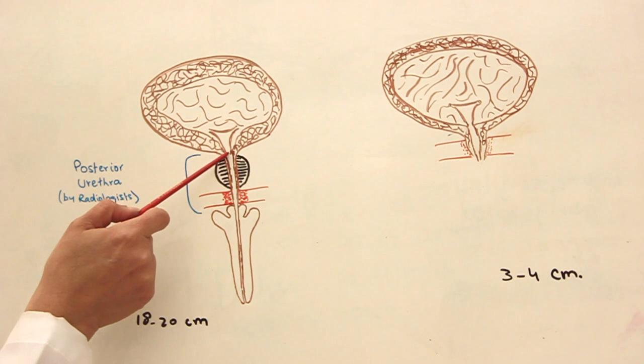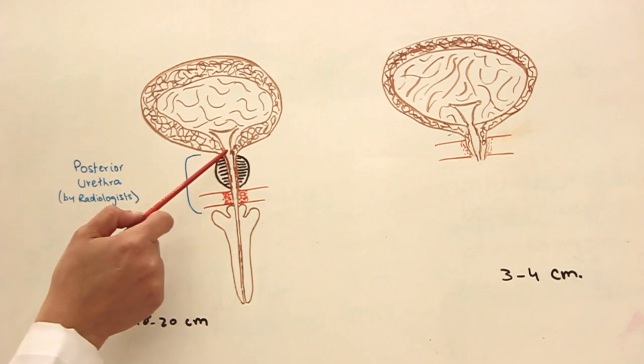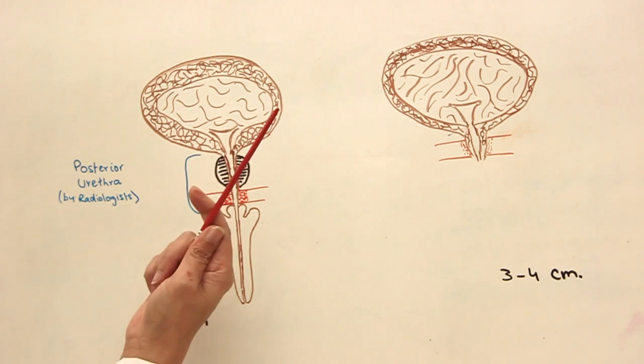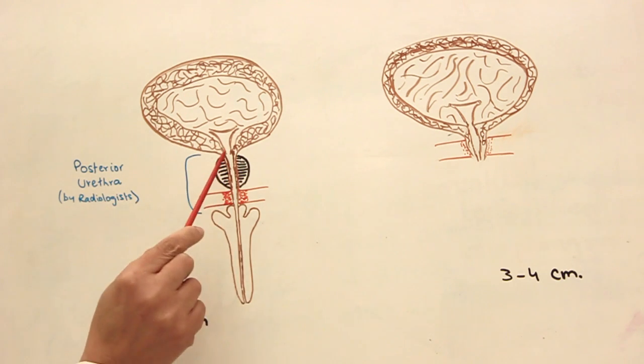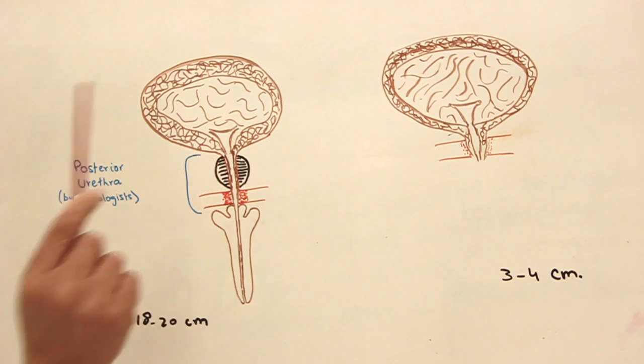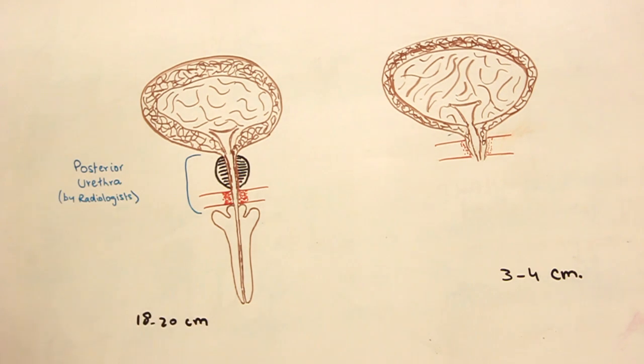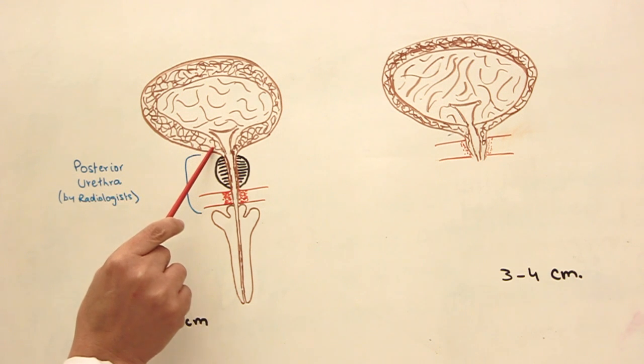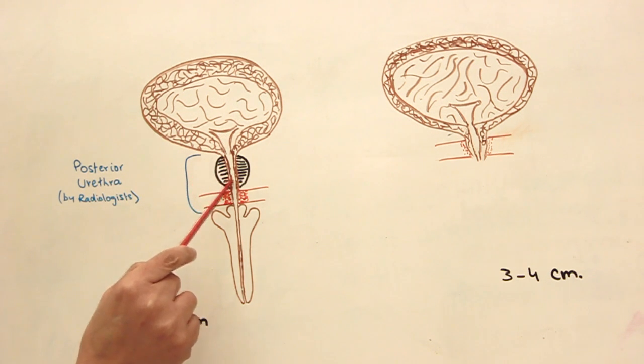This is the region of the internal urethral sphincter, which we just talked about. It's made up of slings of smooth muscles wrapped around this orifice. They are under the control of autonomic nervous system, they are not voluntary. They will relax when the detrusor muscle contracts to allow the urine to trickle down into the urethra.